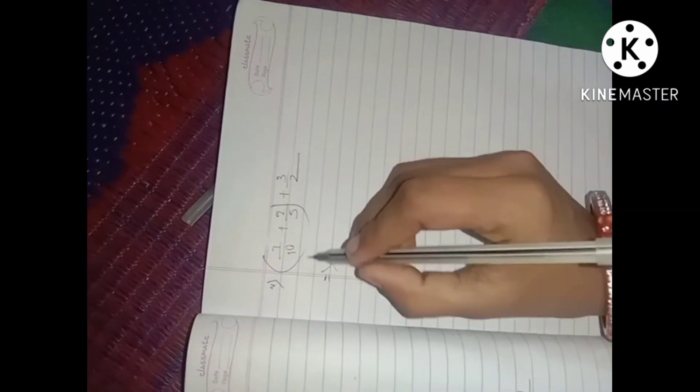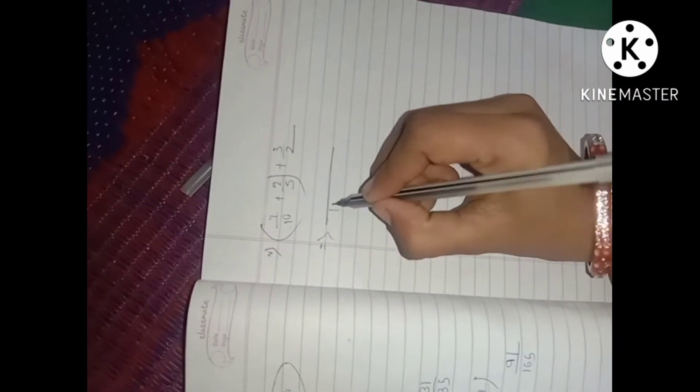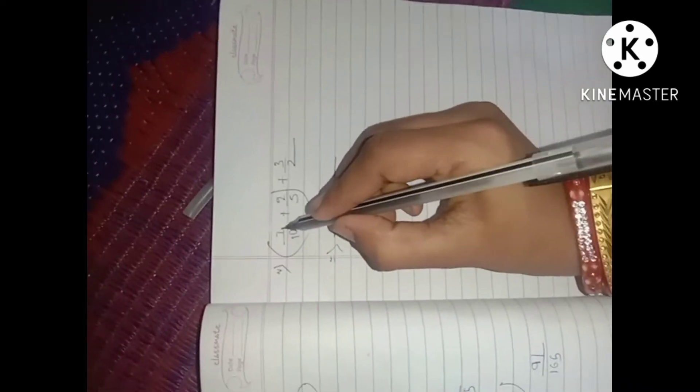So, 10 into 5, 5 into 5 for the denominator. 10 into 5, cross multiplication.